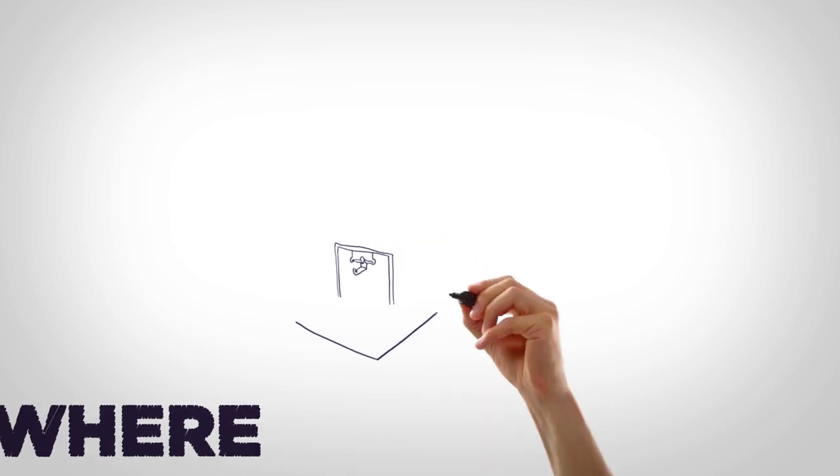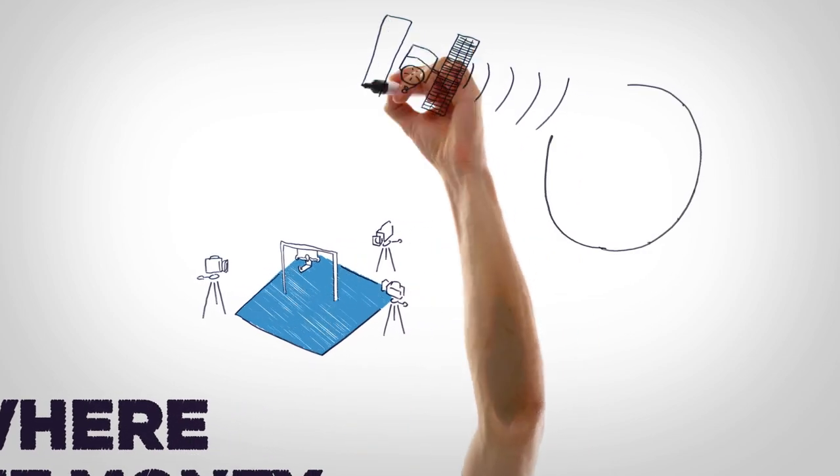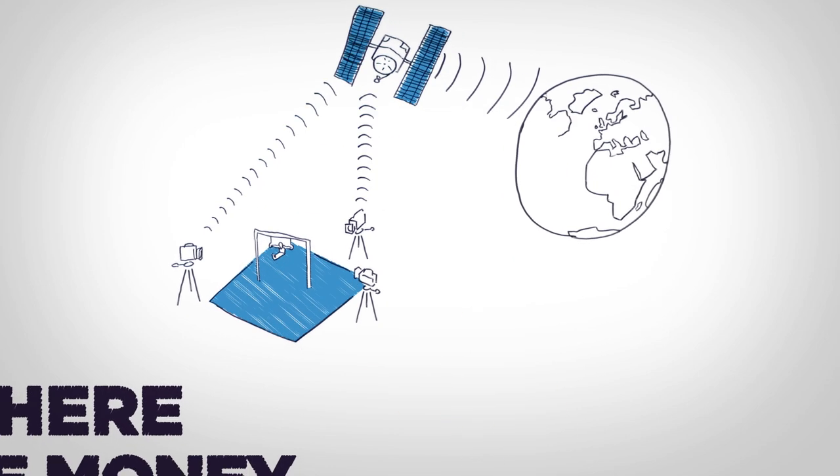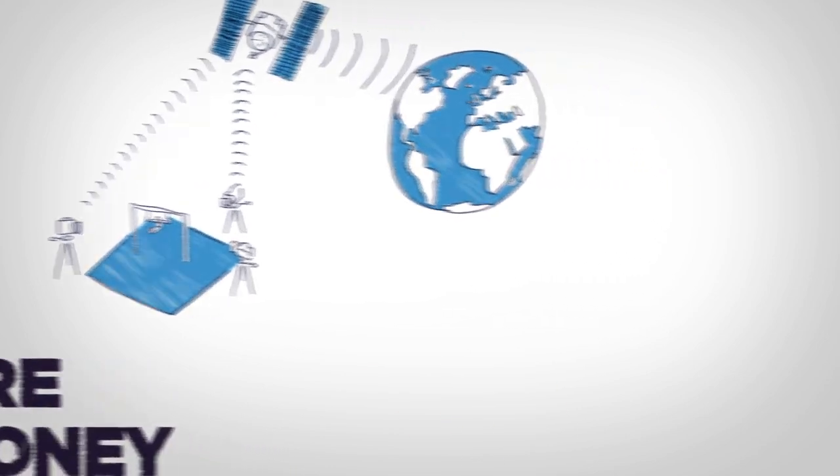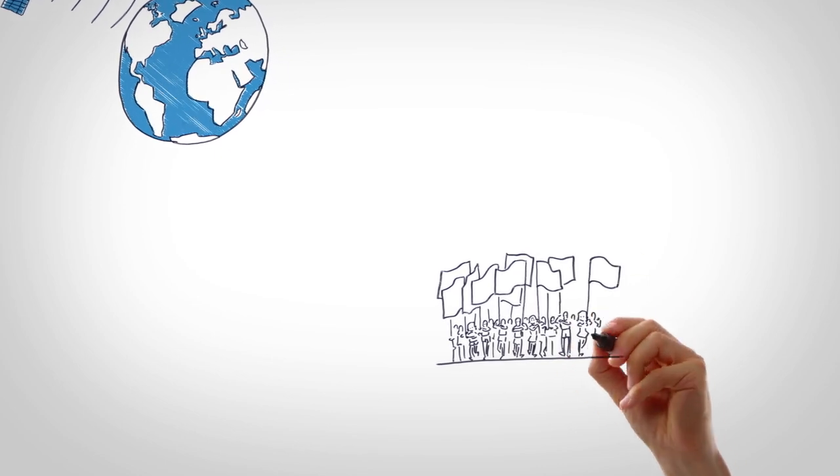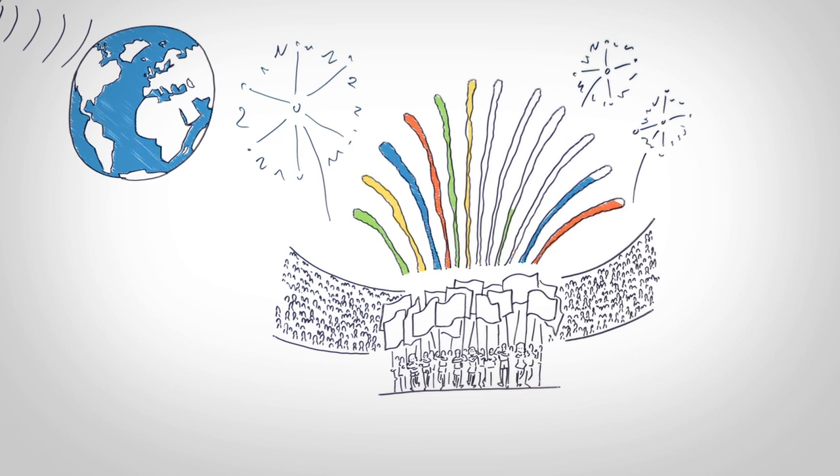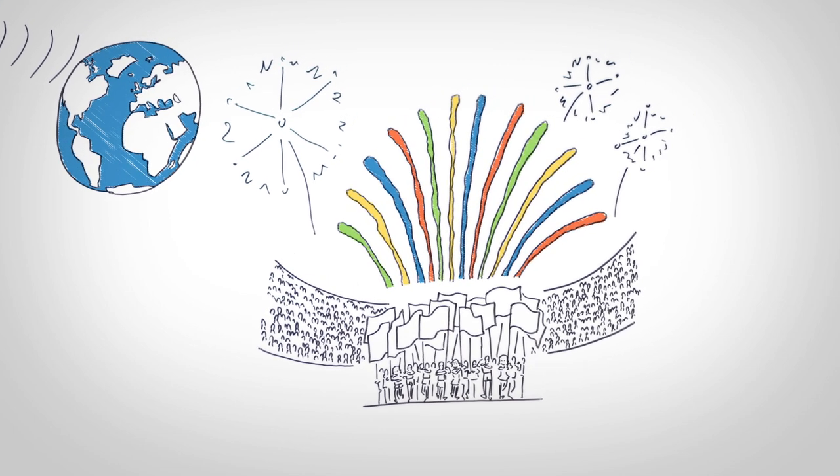A large part comes from broadcast rights. Broadcasters pay to air the Games in their country. More than half the world's population watched at least some of London 2012. And we also partner with some of the world's leading companies who provide funding for the Games and the more than 200 Olympic teams and their athletes. They also supply products and expertise that help the Games run smoothly.